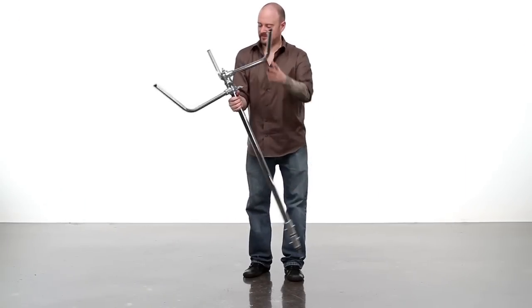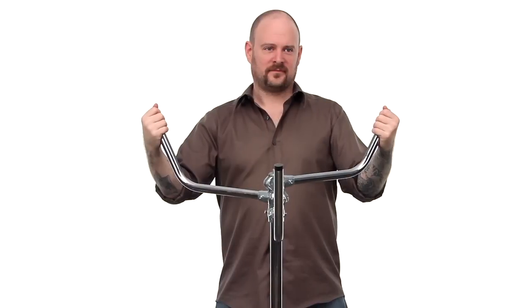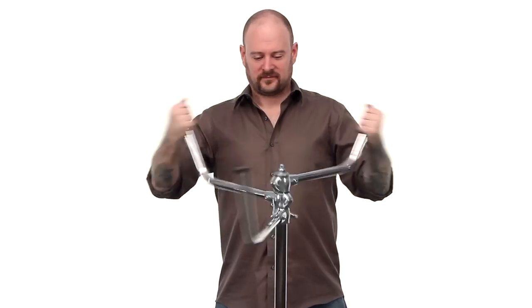To close your Master C-Stand, turn it over and rest the stand on the stud. Grab the short leg with your left hand and the medium leg with your right. Pull together until they lock into place. Mind your fingers now.